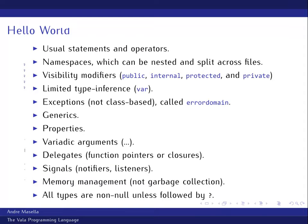In terms of Vala language features: you have the usual if, for, and while. You've got namespaces, which is very nice in the C world where you don't have namespaces. You have visibility modifiers: public, internal, protected, and private. There is limited type inference like C# — when you initialize a variable you don't have to specify the type. It figures out the type from the assignment. It has exceptions, though they are not class-based; that's a weird convention from GLib.